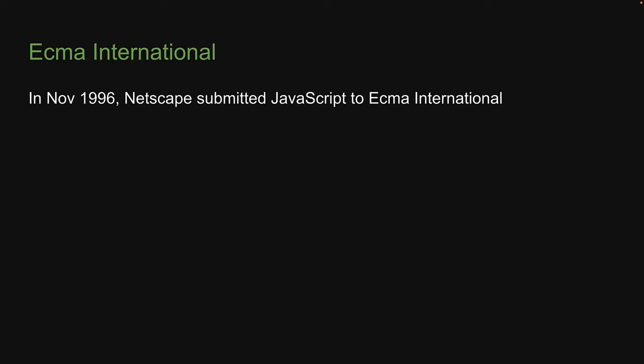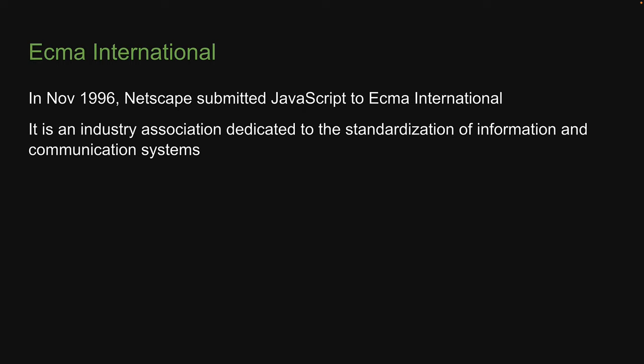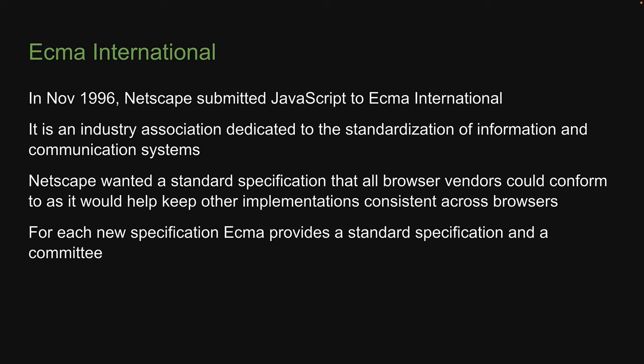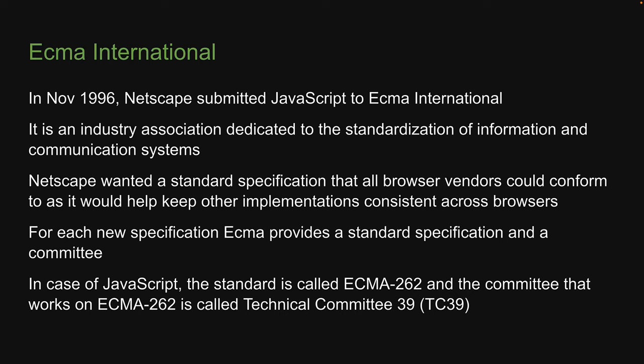To resolve this, in November 1996, Netscape submitted JavaScript to ECMA International — an industry association dedicated to the standardization of information and communication systems. Netscape wanted a standard specification that all browser vendors could conform to, as it would help keep implementations consistent across browsers. For each new specification, ECMA provides a standard and a committee. In the case of JavaScript, the standard is called ECMA-262, and the committee that works on it is called Technical Committee 39, or TC39 for short.